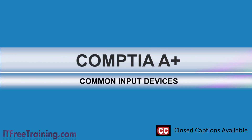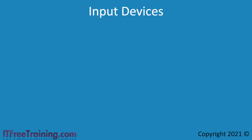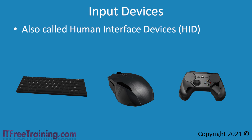In this video from ITFreeTraining, I will look at common input devices that are used by a computer. These devices allow the computer to take input from the user, which is the fundamental way that we are able to control what a computer does. These devices take many different forms, but generally fit the categories of keyboard, mouse, or controllers. These devices are also called human interface devices, or HID. Human interface devices provide the computer with input to allow the computer to operate, allowing the user to interact with the computer in order to get it to do something.